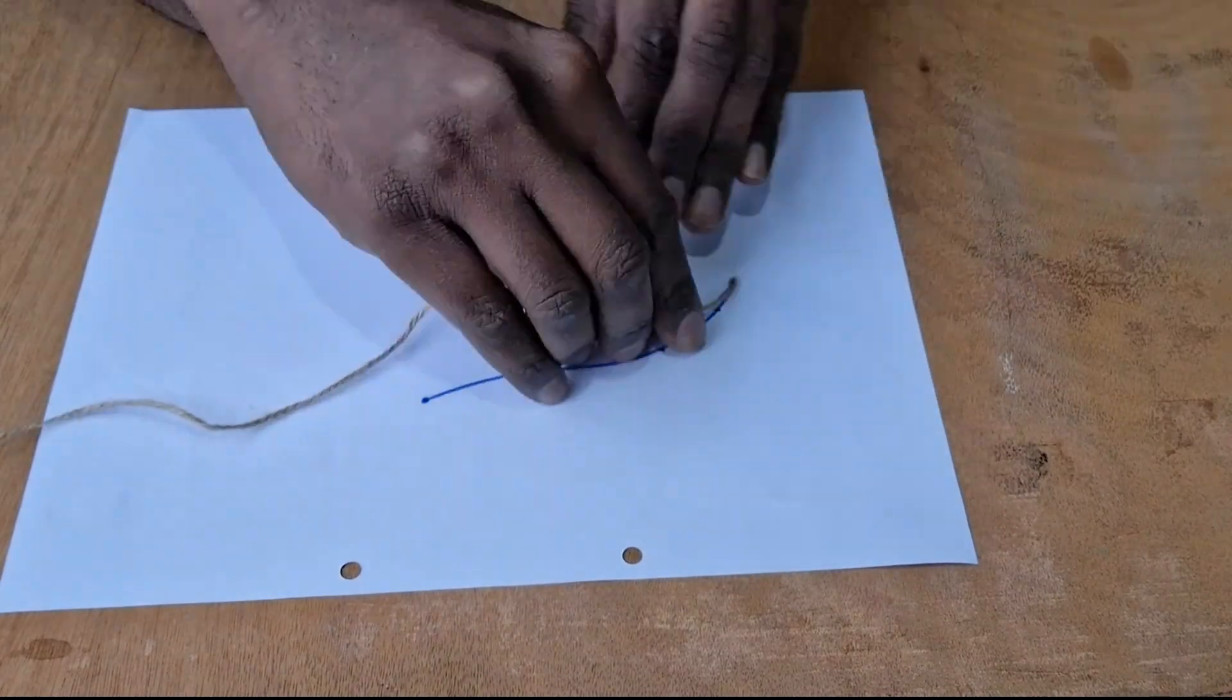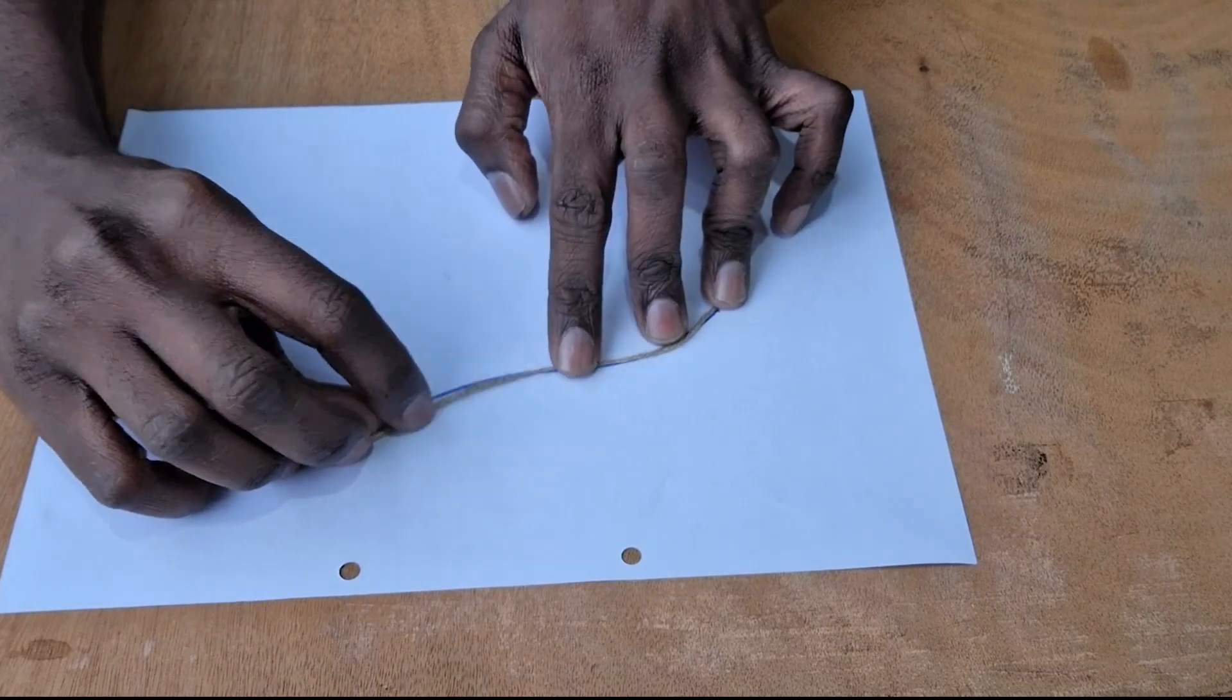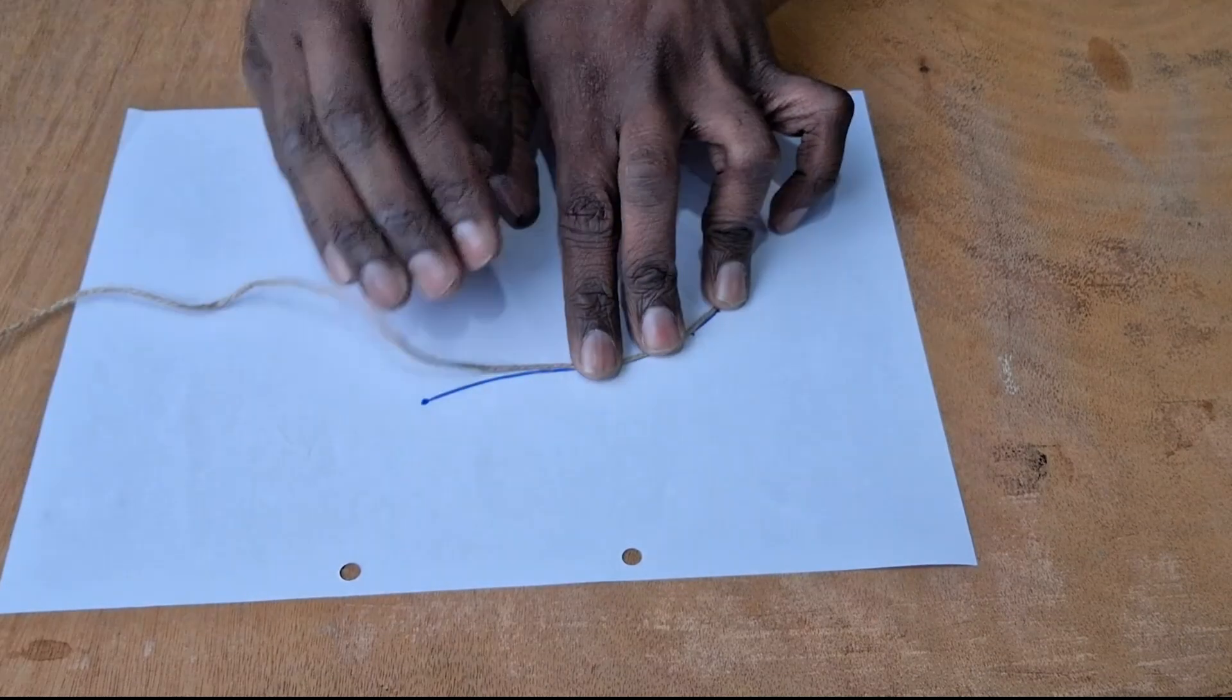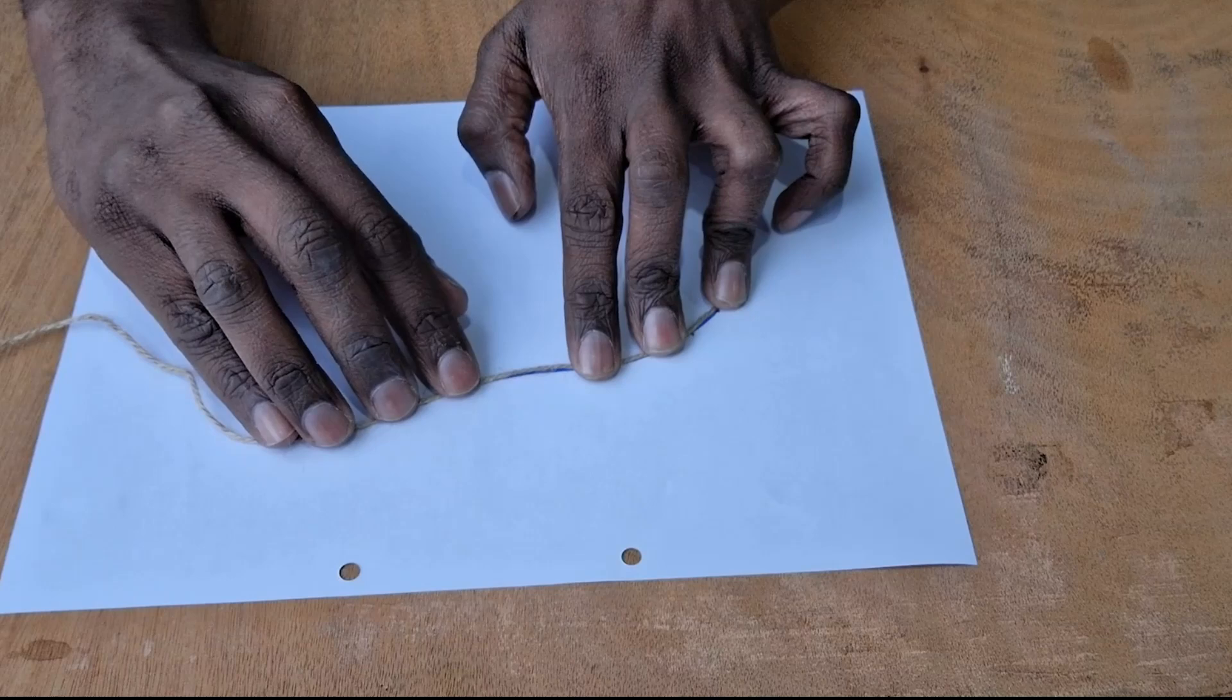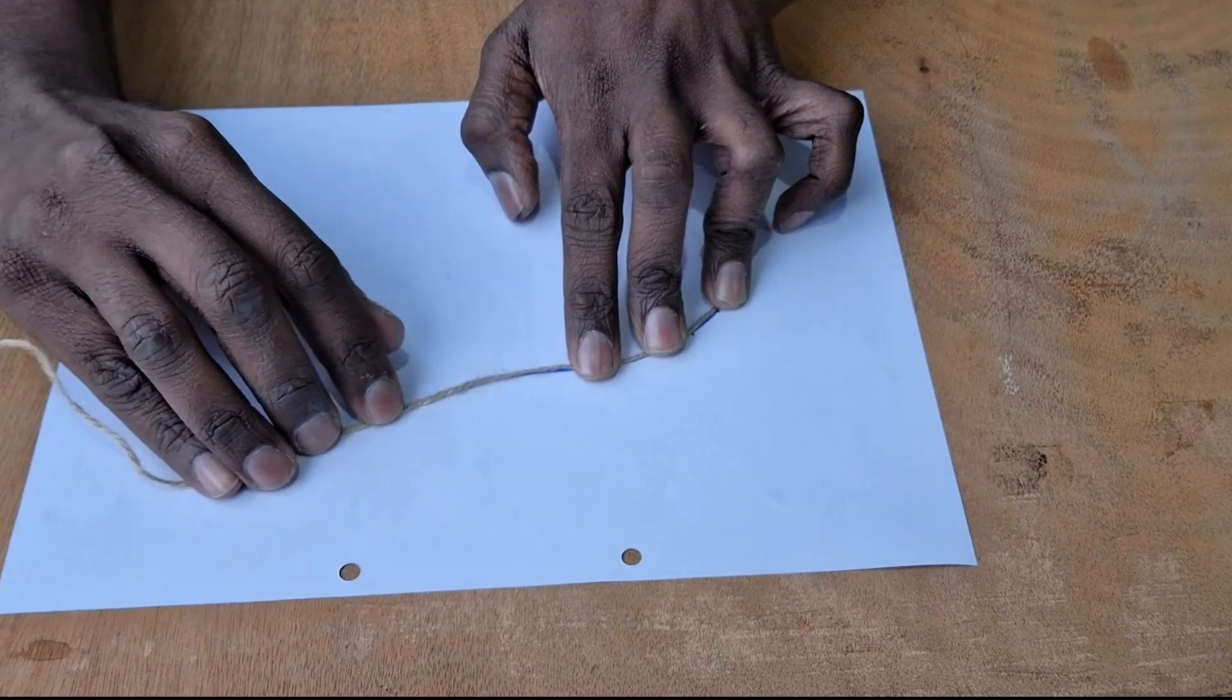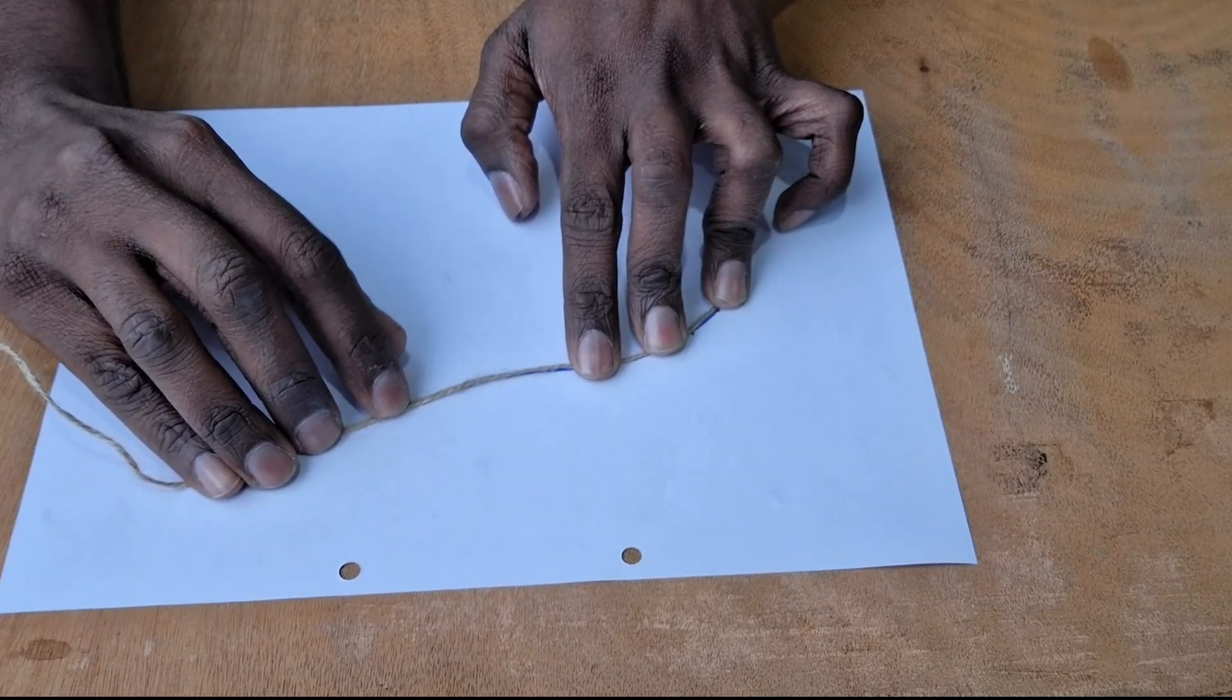I'll just fast forward this bit so that it doesn't get boring. But it takes a little while and finally you'll be able to overlap the entire blue pen line with your thread.